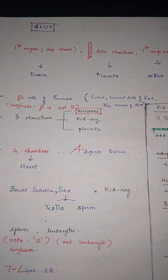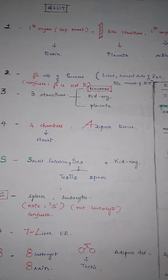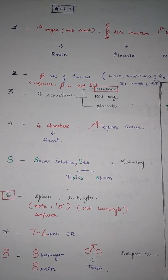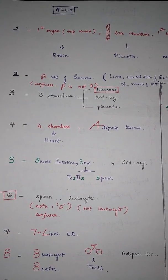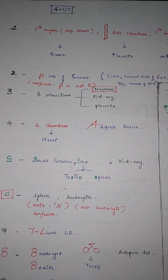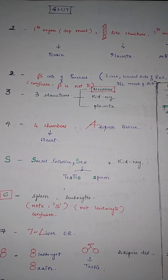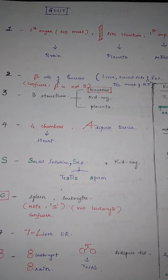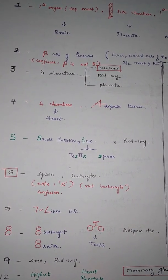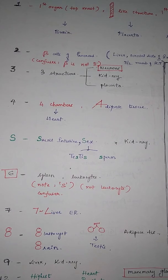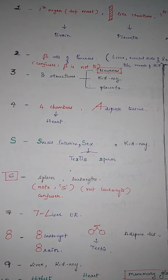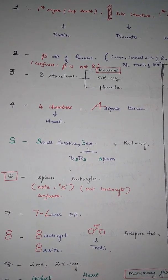And two, we have beta cells of pancreas. The confusion here is beta is not B, because we have B for 8. We used B for 8, so don't get confused. Just remember 2 is beta cells of pancreas. And 3, we have three structures. This we have to remember by heart, but the important one is the neurons, because brain have GLUT 1 but only neurons have GLUT 3. So the three structures are neurons, kidney, and placenta.